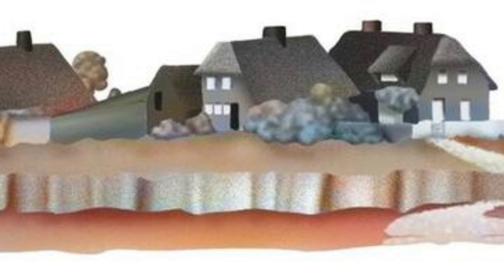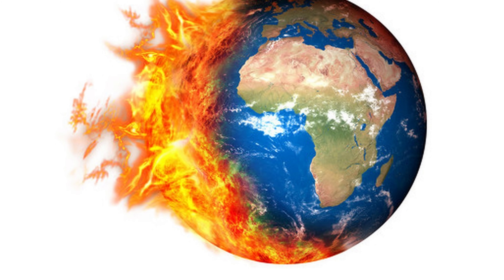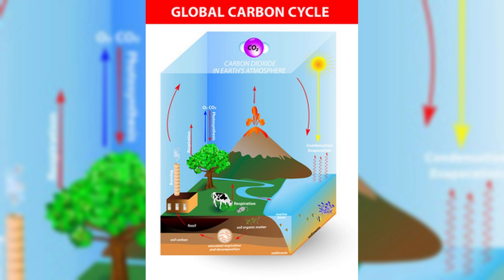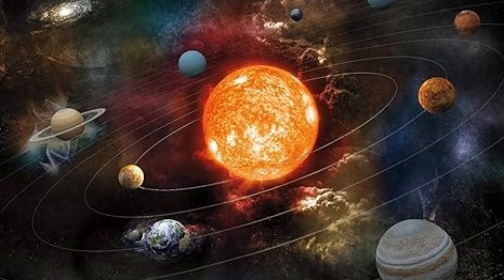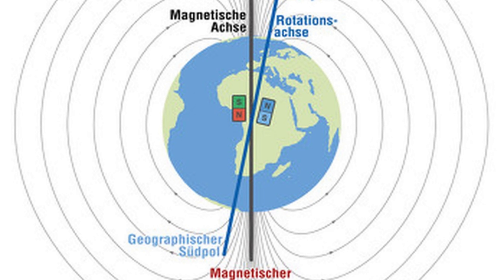Mass extinctions, which have occurred at various points in earth's history, are often linked to geological events. These events can disrupt ecosystems and have long-lasting effects on the planet's climate. Earth's position in the solar system also affects its climate — Milankovitch cycles, which involve changes in earth's orbit, tilt, and precession, influence the timing and intensity of ice ages.